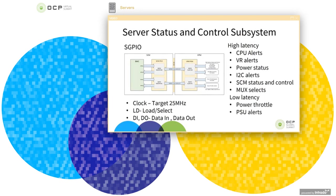Moving on to the serial GPIO interface: the signaling involves four signals — the clock, load or select line, and data in and data out signals. The target frequency of the clock is intended to be 25 MHz or higher. We also support a high latency and a low latency interface, with the latency determined by the number of GPIOs serialized on these buses. High latency signals include CPU alerts, VR alerts, power status and I2C alerts, as well as some MUX selects and SCM status and control signals. Some low latency signals include power throttle and PSU alert type signals, where a quick response may be desired.